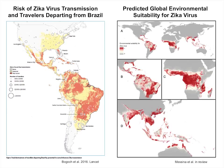Another map shows where we think the world would be receptive to Zika based on environmental factors and expected presence of Aedes aegypti. Where it's red, there's a very high probability; where it's gray, very low. For the United States, Puerto Rico, Florida along the Gulf states, and southern Texas are places of real concern — and Hawaii, which is not on this map.